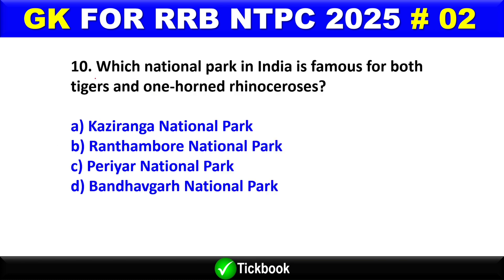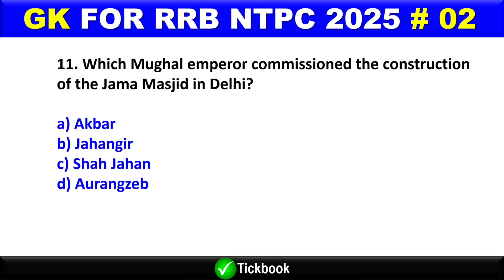Question number 10: Which national park in India is famous for both tigers and one-horned rhinoceroses? Option A is the right answer — Kaziranga National Park, which is in Assam.